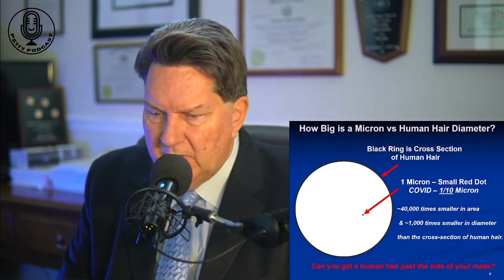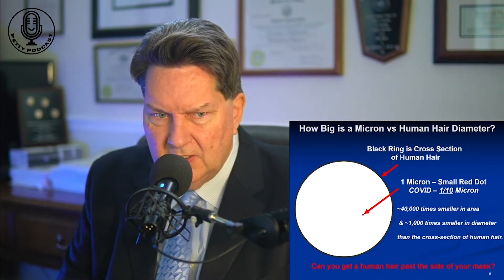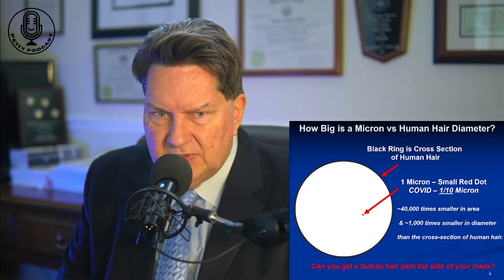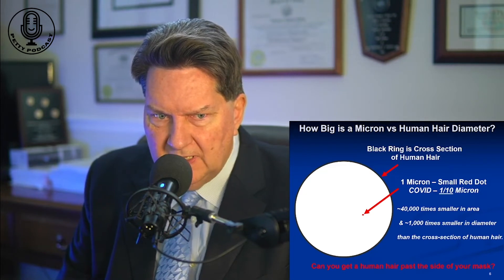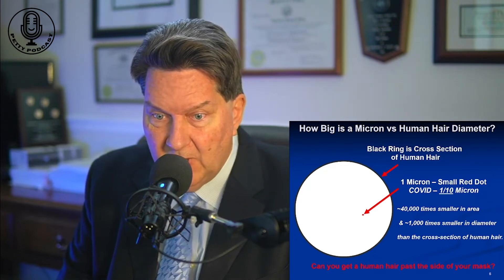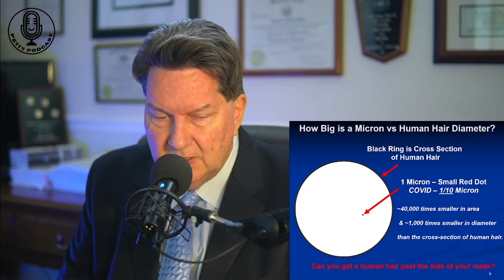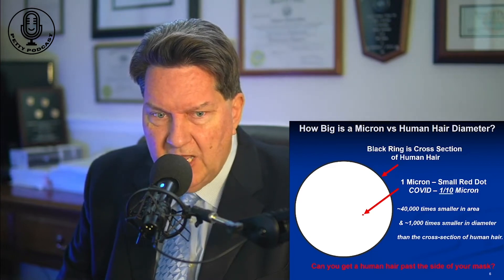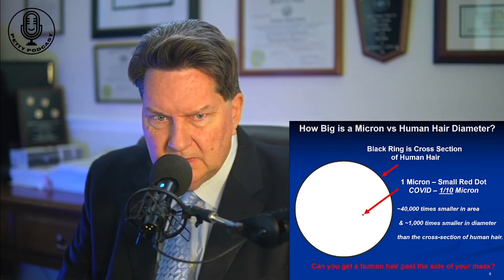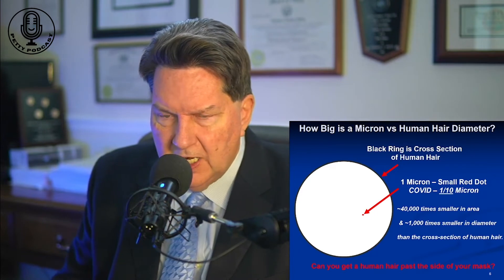I always ask people: when you wear your mask, do you think you can get a human hair past the side of your mask? Well, almost certainly you can. And remember, COVID has a diameter that's 1,000 times smaller than that. If you're wearing facial hair, you certainly can get hair by the side of your mask because it is between your skin and your mask. So you can imagine there's a superhighway around the edge of your mask where it's not sealed, where these little guys — the COVID particles — can come in and out.